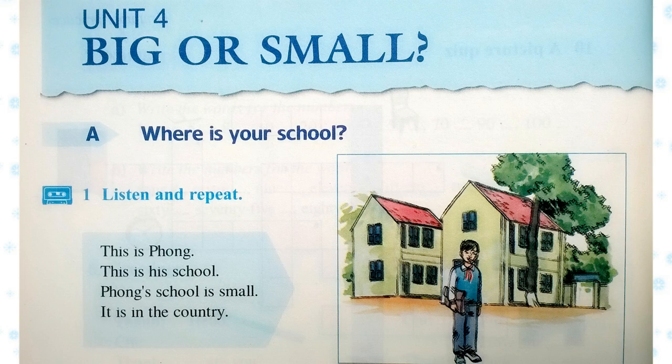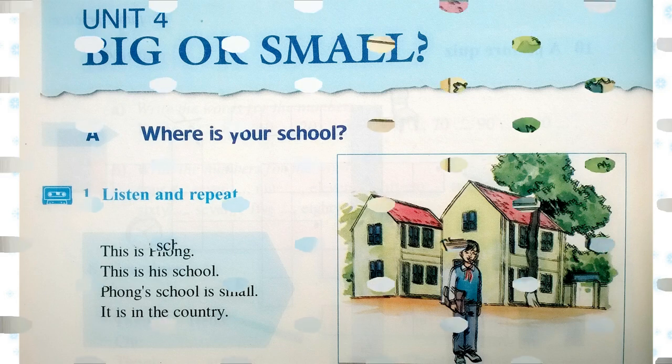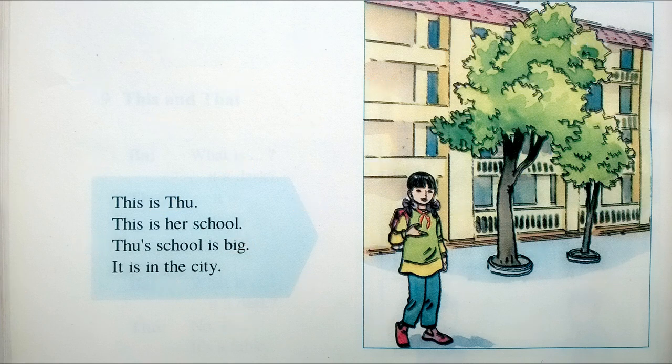Unit 4: Big or Small. Where is your school? One: Listen and repeat. This is Fong's school. Fong's school is small. It is in the country. This is Tu's school. Tu's school is big. It is in the city.